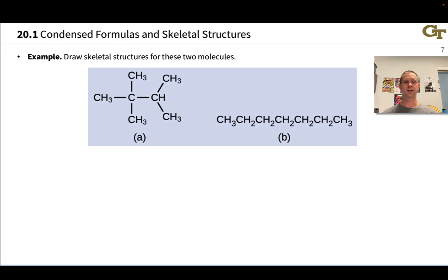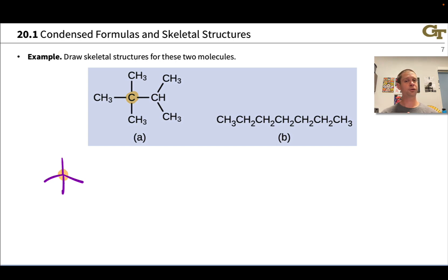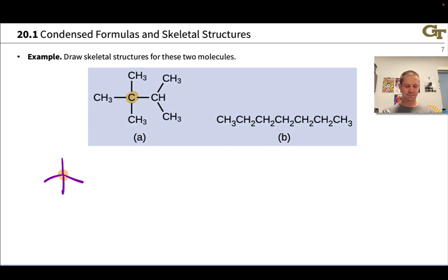Let's practice drawing skeletal structures for the two molecules shown here. For molecule A, the first thing I'd do is eliminate the carbon labels. The carbon in the middle is connected to four other carbons, so we put it at the center of four bonds. We can omit the CH3 groups since it's understood each of those carbons will have three hydrogens — though some people draw them out explicitly to make clear it's a methyl group. At the remaining carbon, which has a CH bond and two other bonds to carbon, we draw those two CC bonds, and the H can be omitted. This is structure A.